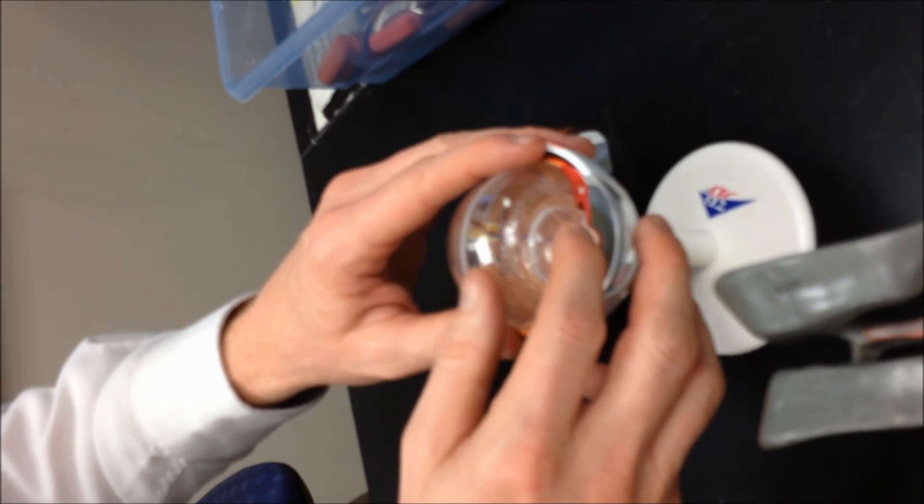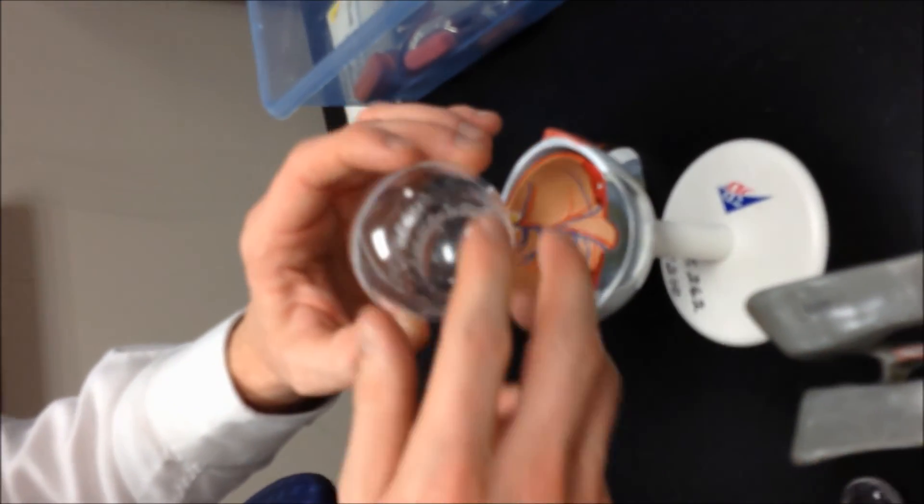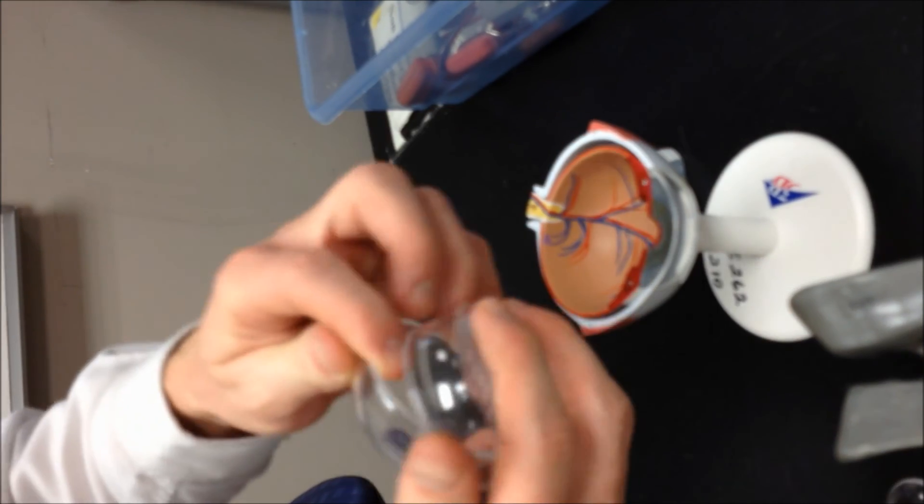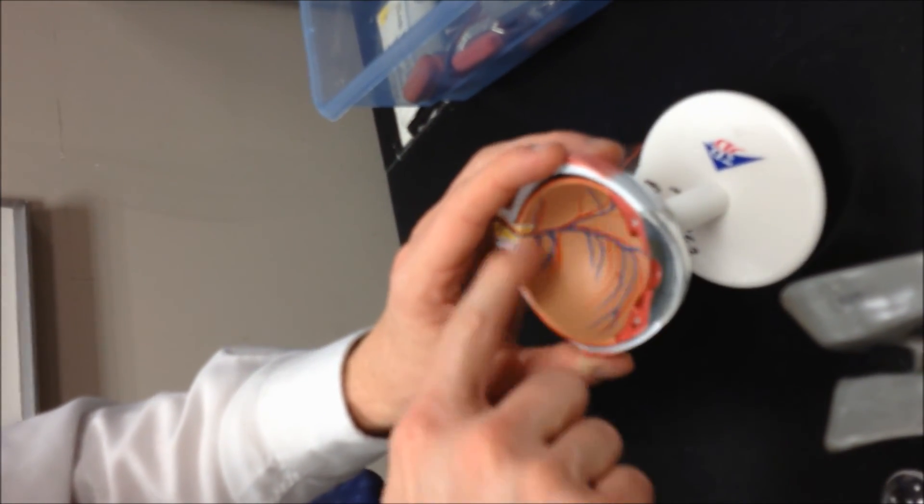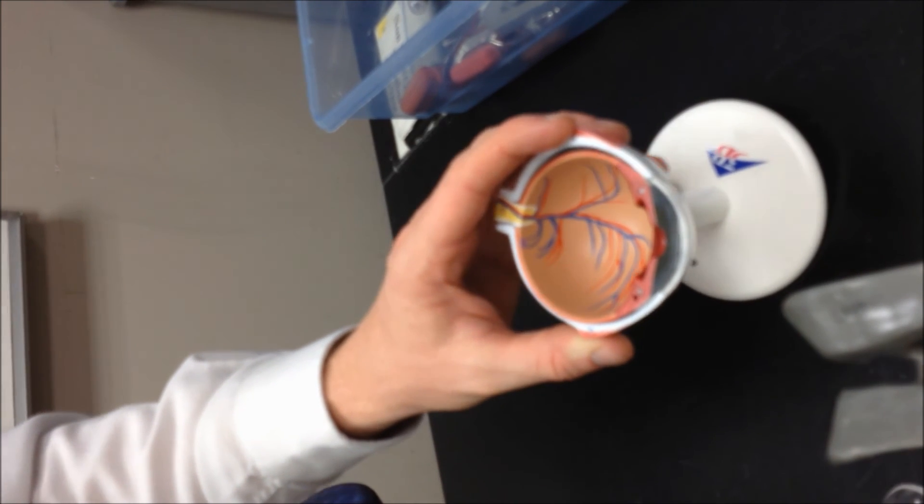And then back here behind the pupil, we have the lens. And this would be the vitreous body, vitreous humor. And that sits in the posterior compartment or cavity. And the anterior cavity is everything in front of the lens to the cornea.